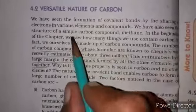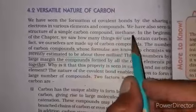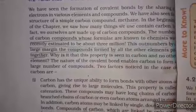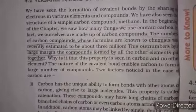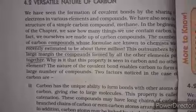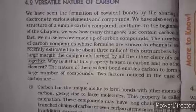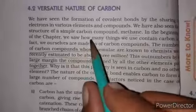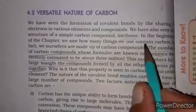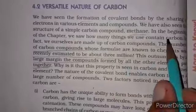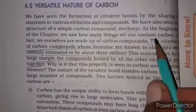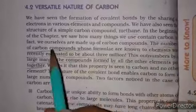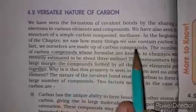We have also seen the structure of a simple carbon compound, that is methane — because carbon has four electrons and shares one electron with each hydrogen atom to form eight electrons in its shell. In the beginning of the chapter, we saw how many things we use contain carbon.